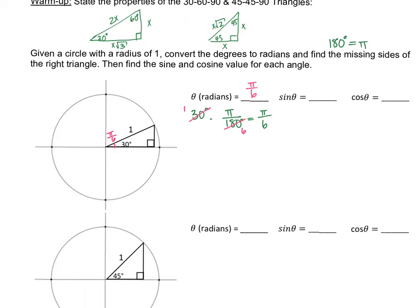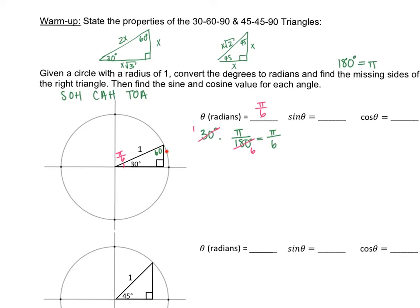Now we're going to find sine. If you remember SOH-CAH-TOA: sine is opposite over hypotenuse, cosine is adjacent over hypotenuse, and tangent is opposite over adjacent. I know this is a 30-degree angle, so this other side is 60 degrees. Using the 30-60 triangle properties, the 60-degree side is the shorter side. Since the hypotenuse is 1, that means this side here is one-half, because the short side is half of the long side. And this other side is one-half times the square root of 3, which is the square root of 3 over 2.